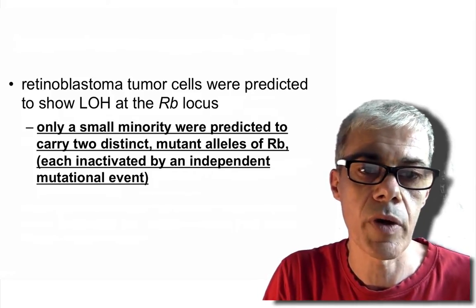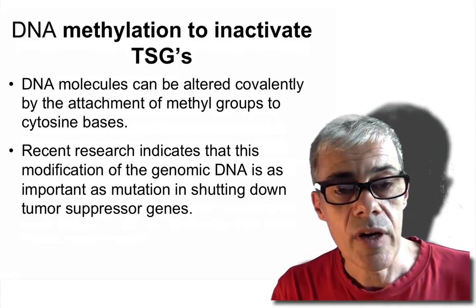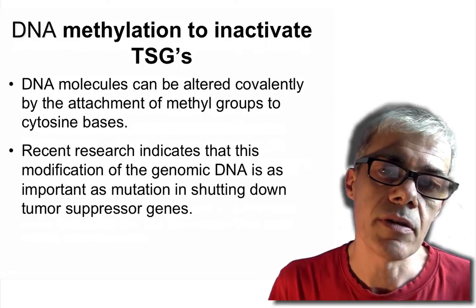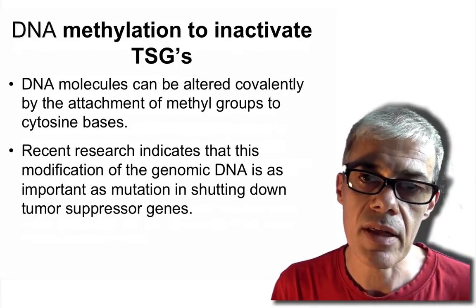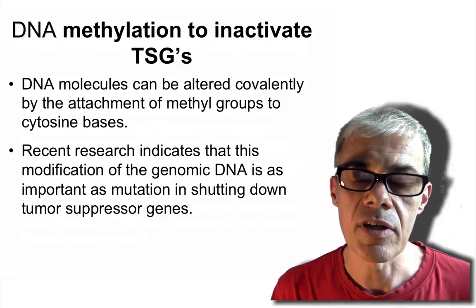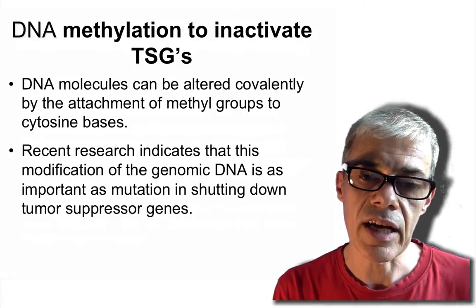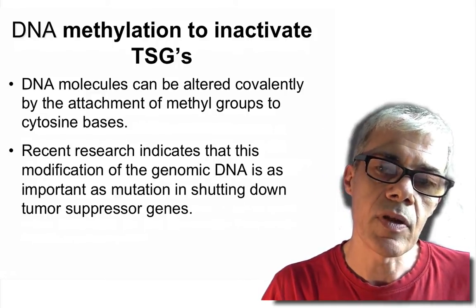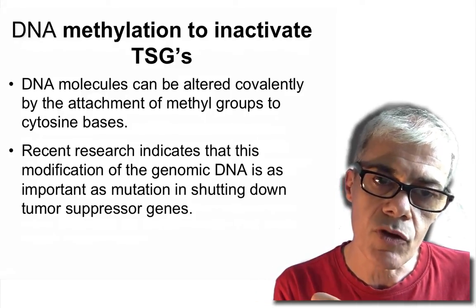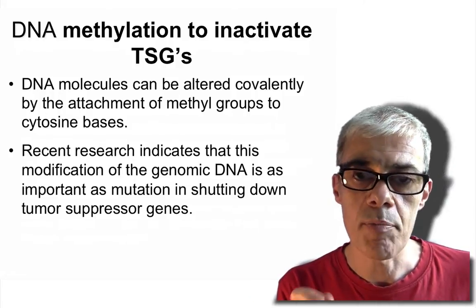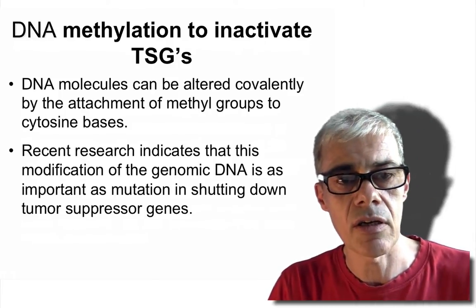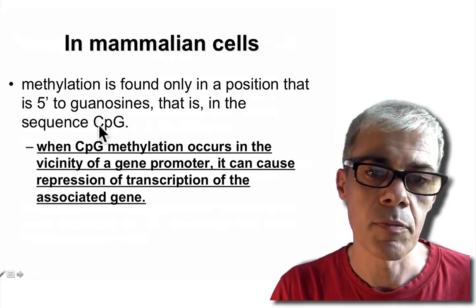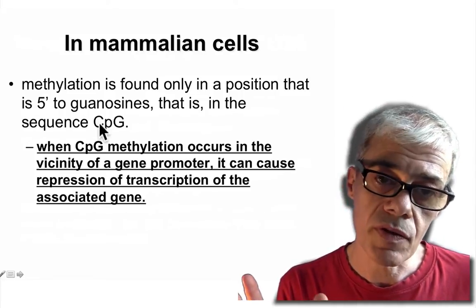Another way to knock out a gene is by reducing its expression through an epigenetic change: DNA methylation. When methylation occurs in the promoter region of genes it can shut down promoter activity, so you don't get expression of that gene. DNA methylation is the addition of methyl groups to DNA bases — specifically the cytosine bases get methylated. A cytosine adjacent to a guanine — at CG sequences — can be methylated, and this is a very common sequence, so there are many sites in the genome where this can occur.